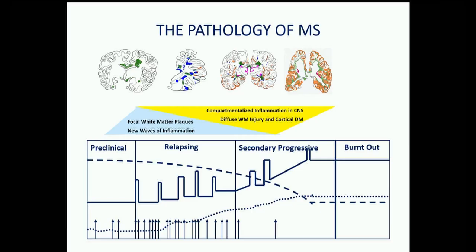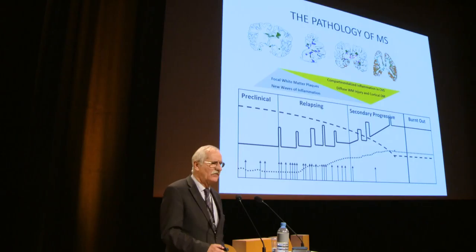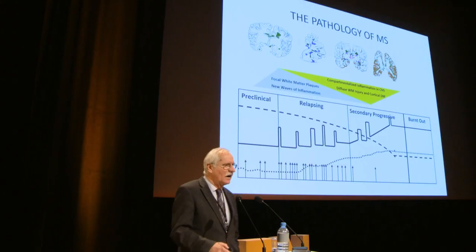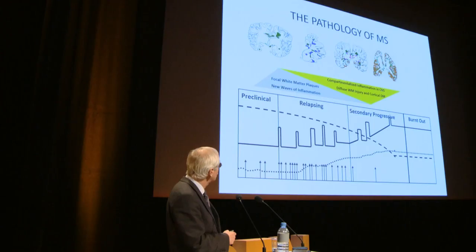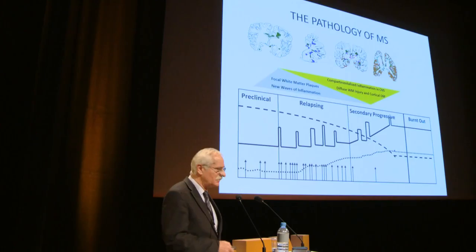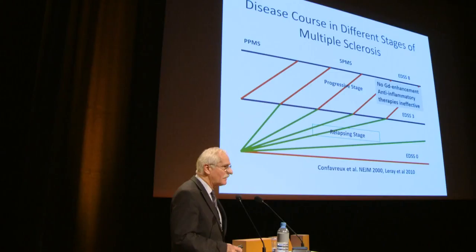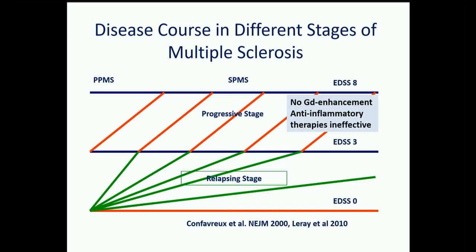Regarding tissue damage, MS is not — as originally defined by Charcot — a focal disease producing only focal white matter lesions, but one affecting the entire brain: with expanding focal lesions, diffuse injury of entire white matter, and cortical lesions that develop predominantly in later stages. The question arises about the underlying mechanisms.